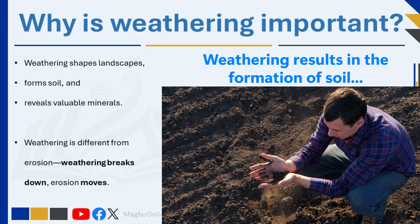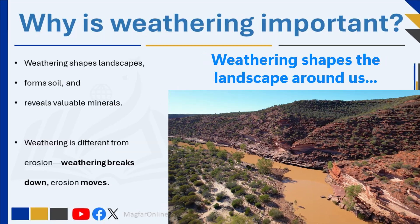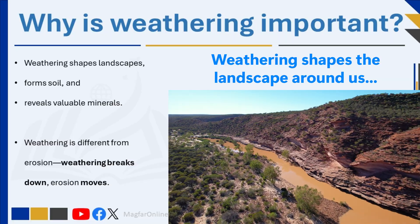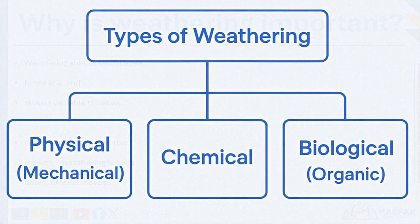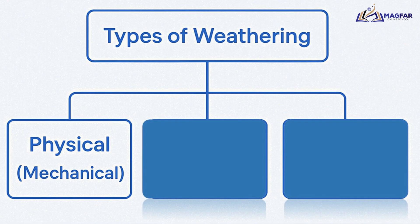Weathering helps form soil, influences the shape of hills and valleys, and even exposes valuable minerals. There are three main types of weathering: physical or mechanical weathering, chemical weathering, and biological weathering. Today we'll focus on physical weathering only — check out the links below for chemical and biological weathering.